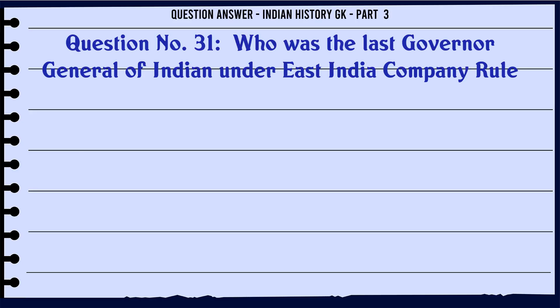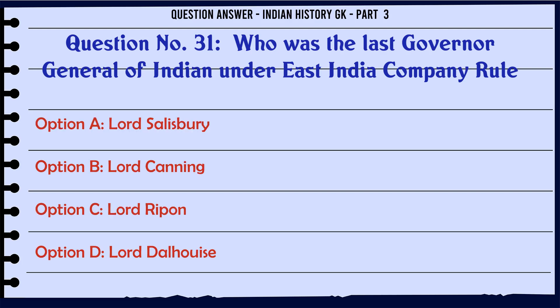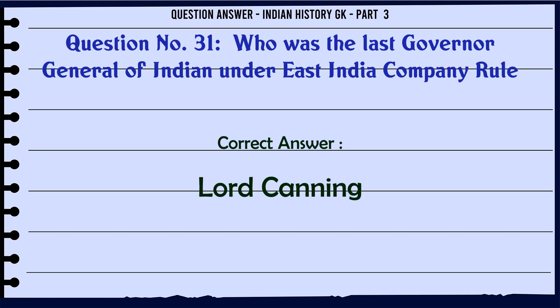Who was the last Governor-General of India under East India Company rule? A. Lord Salisbury, B. Lord Canning, C. Lord Ripon, D. Lord Dalhousie. The correct answer is Lord Canning.